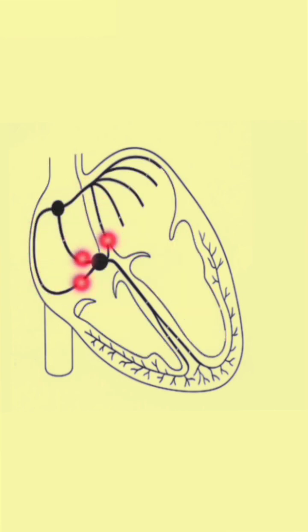Next, the signal pauses at the AV node. Think of it like a traffic signal. It slows the impulse just enough to let the ventricles fill with blood.